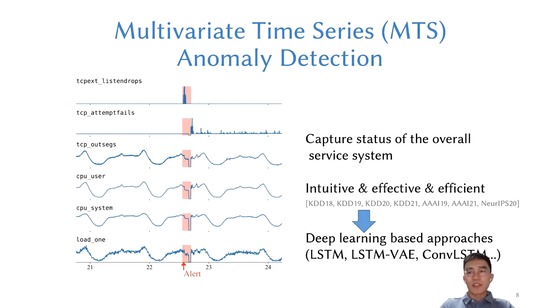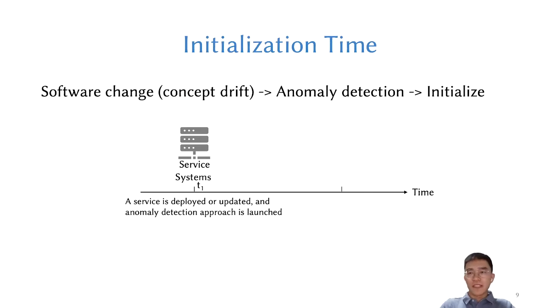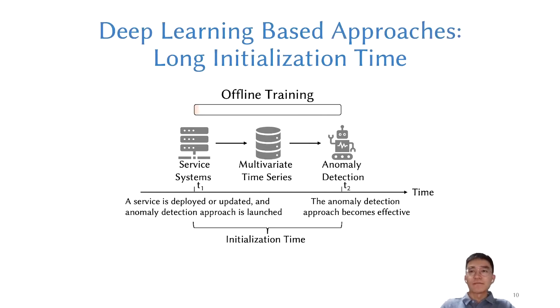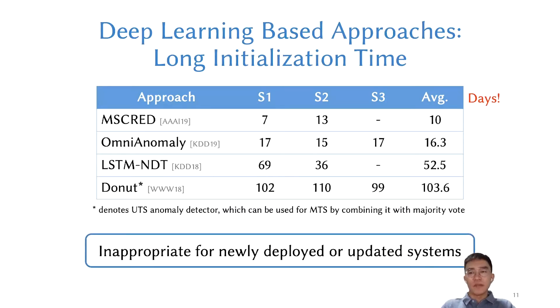However, these learning-based approaches are hardly deployed in real practice because they usually require a long period of training data. More specifically, with a new service being deployed or updated, operators usually launch an anomaly detection approach for it. We define the initialization time of the anomaly detection approach as the time lag between when it is launched and when it becomes effective. Typically, deep learning-based approaches need a lot of time to train the model because of both accumulating training data and the training process. We list the suggested initialization time of four deep learning-based anomaly detection approaches under evaluation datasets. We can see that the average initialization time of these approaches ranges from 10 days to more than 100 days. Therefore, it is inappropriate to use these approaches for a newly deployed or updated system.